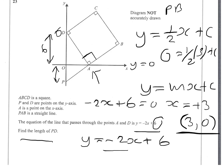When Y is 0, a half times 3 plus C equals 0. So we get 3 over 2 plus C equals 0, which means C equals minus 1.5. The intercept of the perpendicular line is minus 1.5.